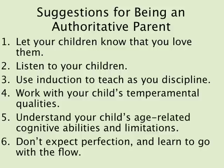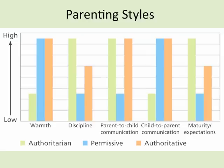Suggestions for being an authoritative parent: let your children know you love them; listen to your children; use induction to teach as you discipline — explain why, not just 'because I said so'; work with your child's temperament; and understand your child's age relative to their cognitive abilities and limitations. A five-year-old shouldn't be expected to act like an eleven-year-old. Be clear, don't expect perfection, and understand appropriate expectations. A final graph demonstrates that the authoritative parenting style produces the best outcomes.